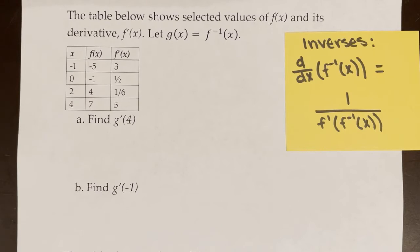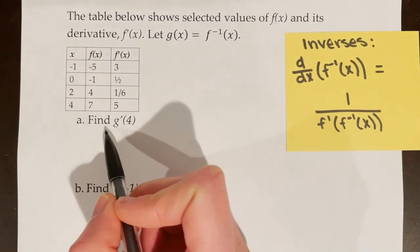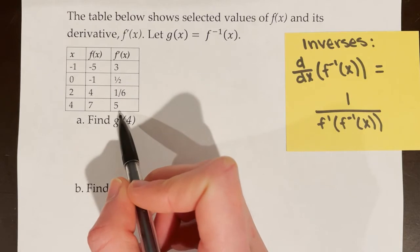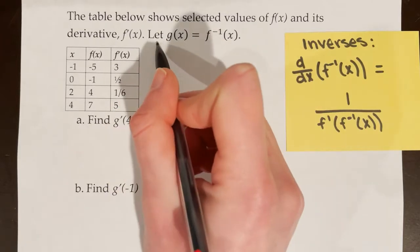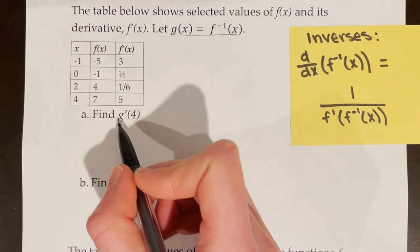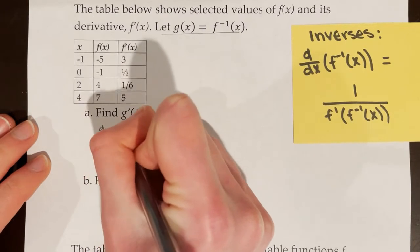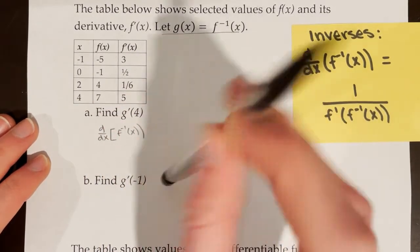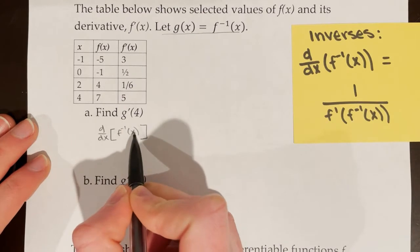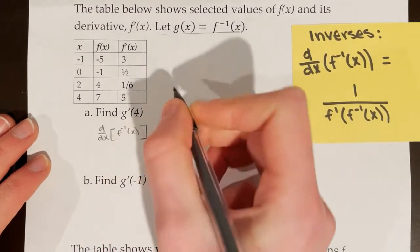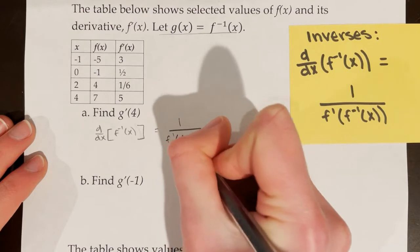The table below shows selected values of f of x and its derivative f prime of x. Let g of x equal f inverse of x. In part A, we're being asked to find g prime of 4. We don't have any information about g in our table — no g or g prime. However, we know that g and f are inverses, so finding g prime of 4 is the same as finding the derivative of f inverse of x at 4. Using our rule, the derivative of f inverse of x equals 1 over f prime of f inverse of x.